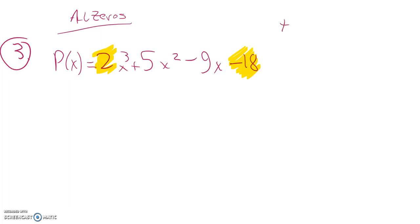So my possible zeros, according to this, plus or minus, factors of 18 are 1, 2, 3, 6, 9, and 18 divided by factors of 2, 1 and 2.